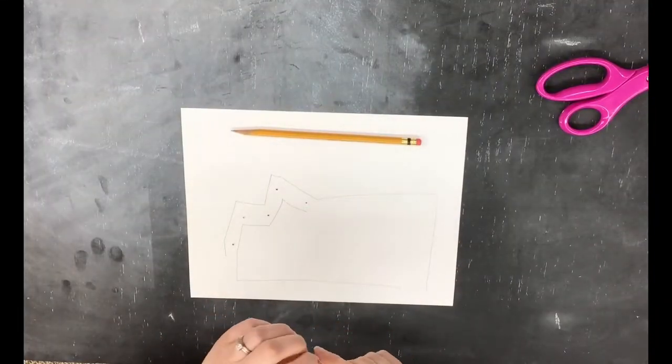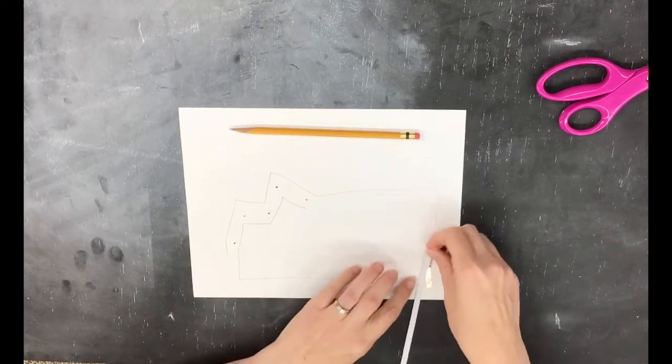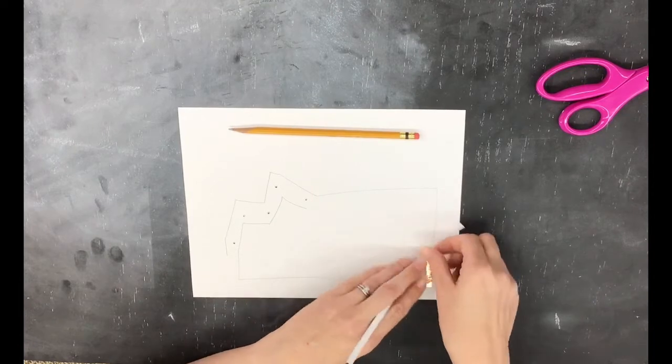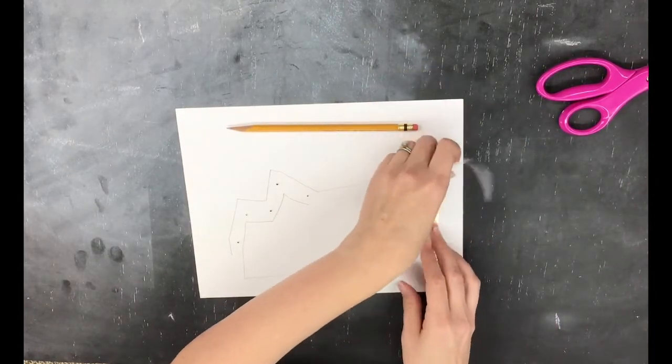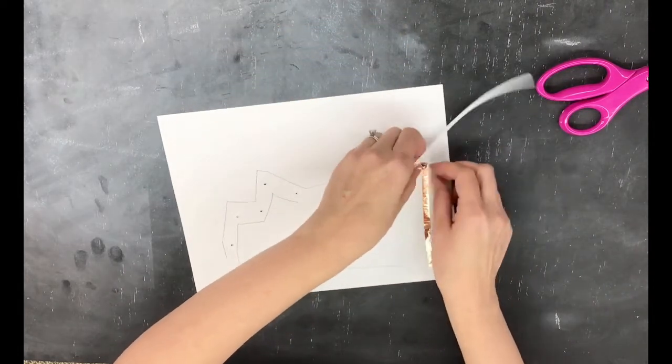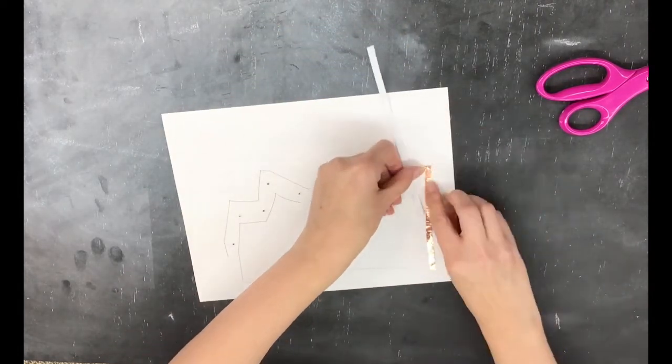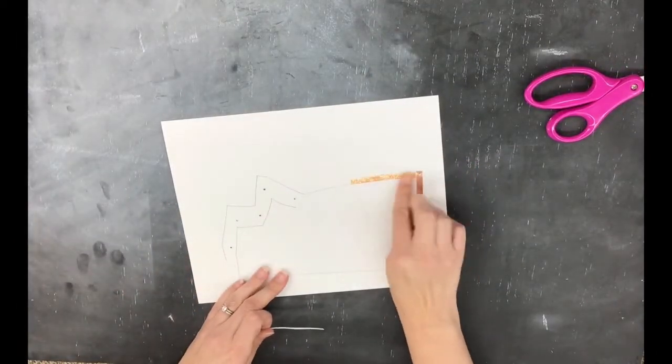Attach copper foil tape to the paper. Do this by removing the backing on the tape to expose the sticky side. Follow the pencil lines. Remember when turning corners or attaching a new piece of tape, the adhesive is not conductive, so you must fold over the copper foil so copper is touching copper. Place tape on all of the lines.